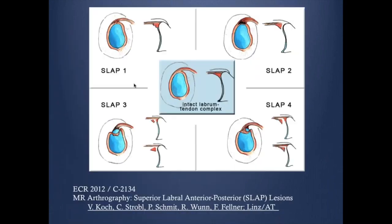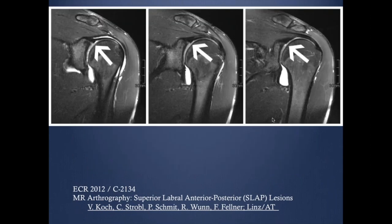For SLAP lesion classification, we are not going to go through all 13 types, just the four common ones. Type 1 is degenerative fraying. Type 2 shows abnormal linear signal intensity, and this is the one we have to differentiate from the sub-labral recess. Type 3 is when we have a bucket handle fragment — a separate fragment. And Type 4 is when there is extension to the biceps anchor and the biceps tendon.